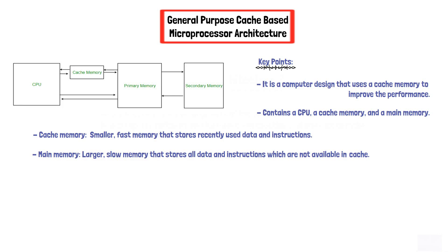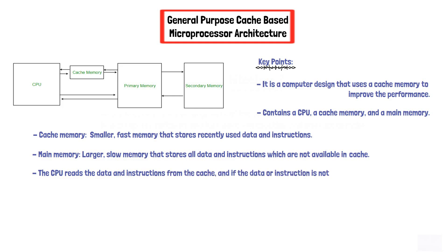In the case of the central processing unit CPU, it reads the data and instructions from the cache, and if the data or instruction is not present in the cache, it retrieves it from the main memory and stores it in the cache memory.